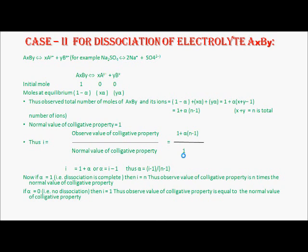If alpha equals 1 (100% dissociation), then i equals N, meaning the observed value of colligative property is N times the normal value. If alpha equals 0 (no dissociation), then i equals 1, meaning the observed value of colligative property equals the normal value.